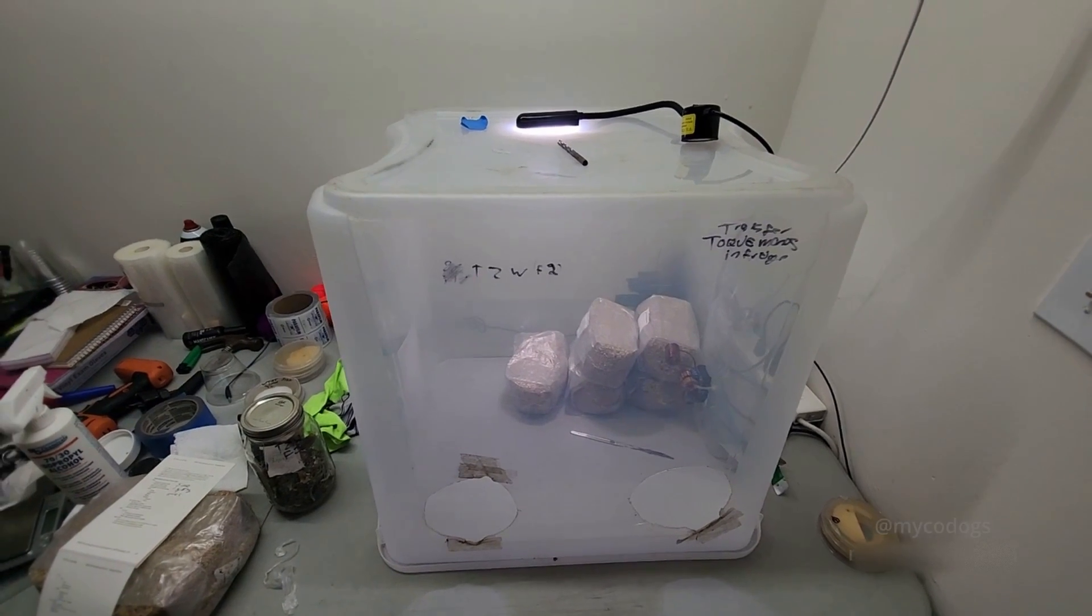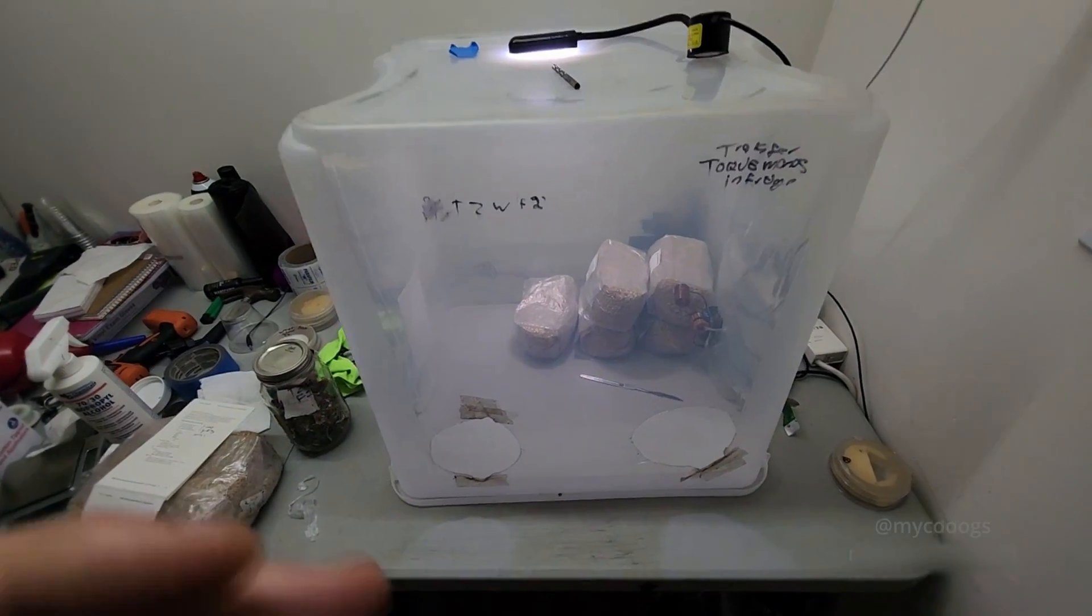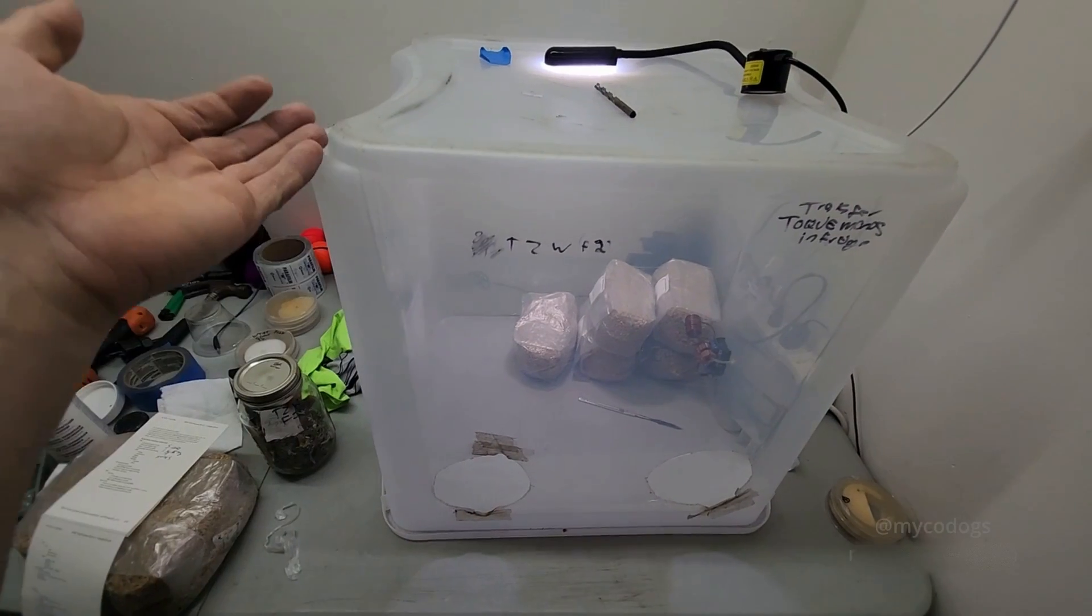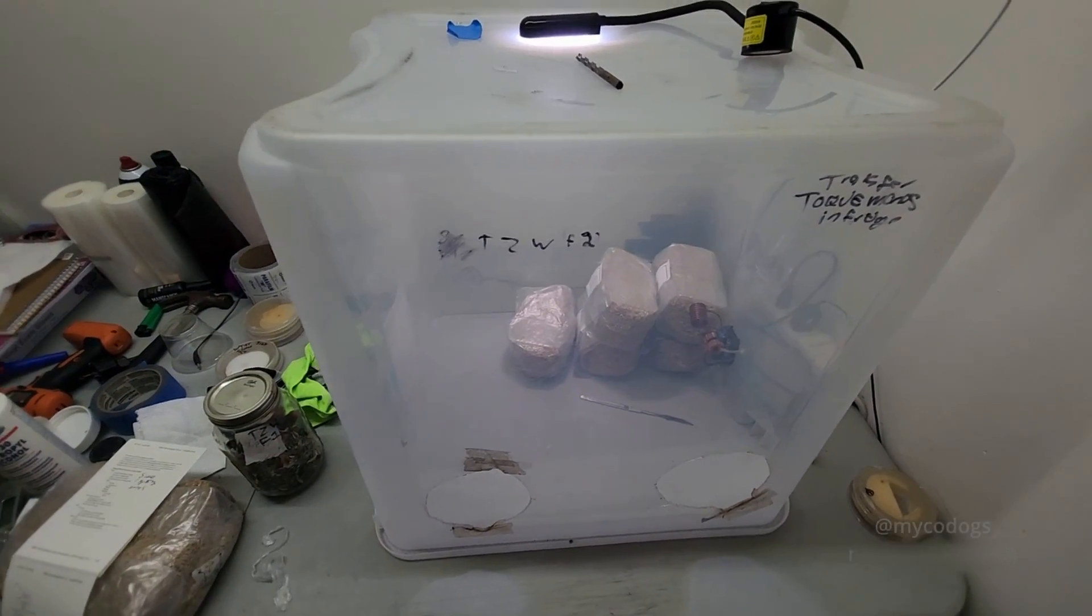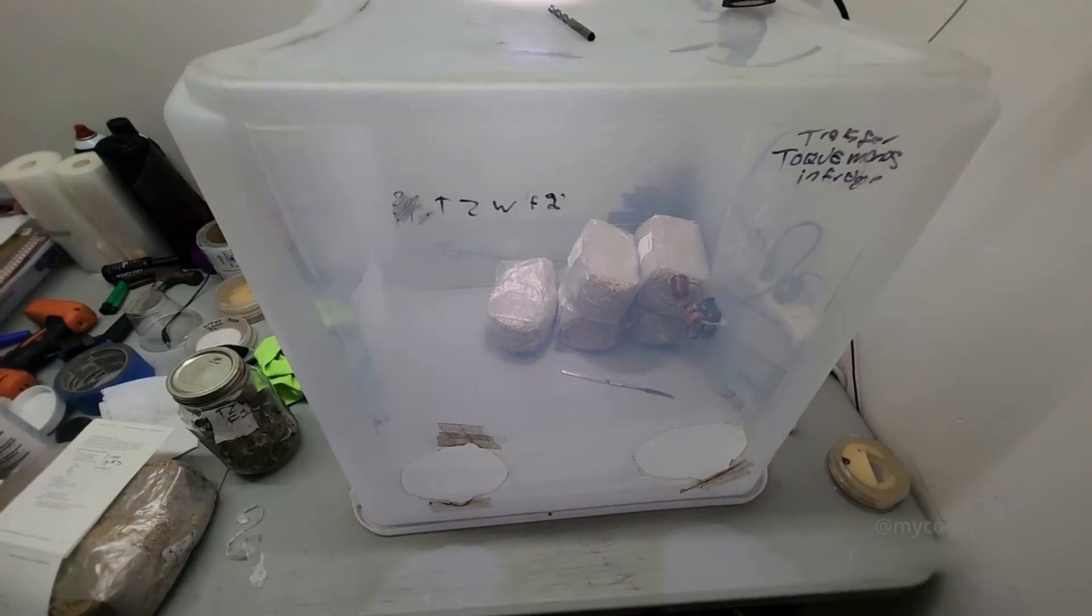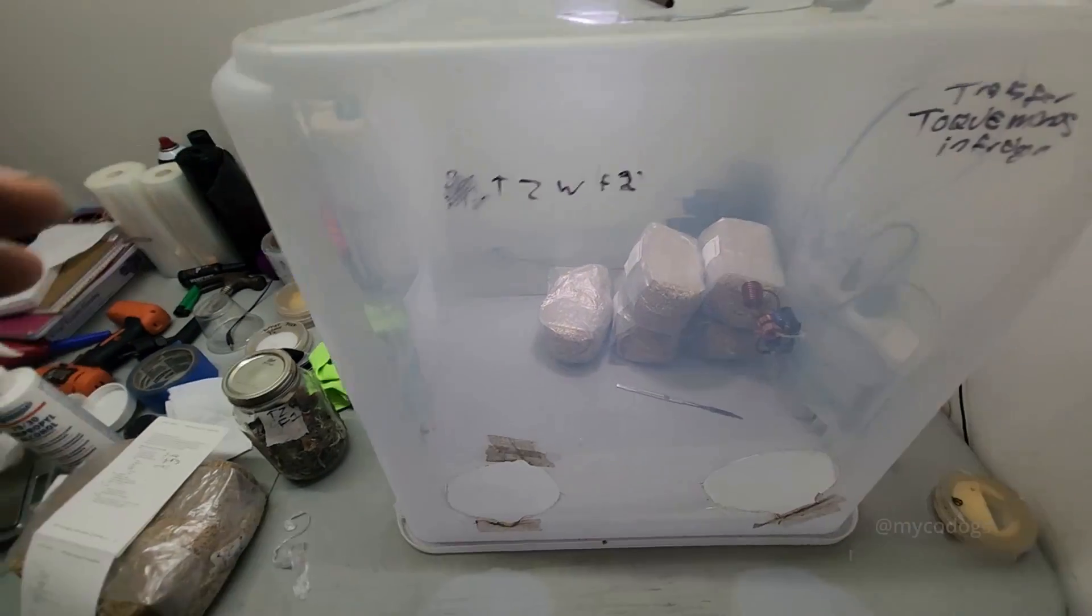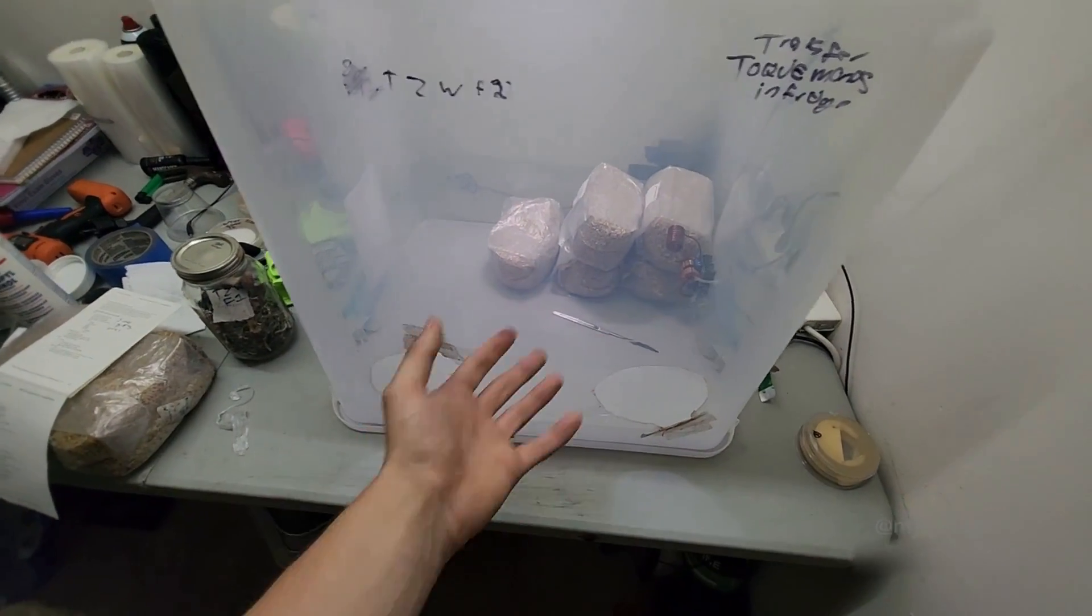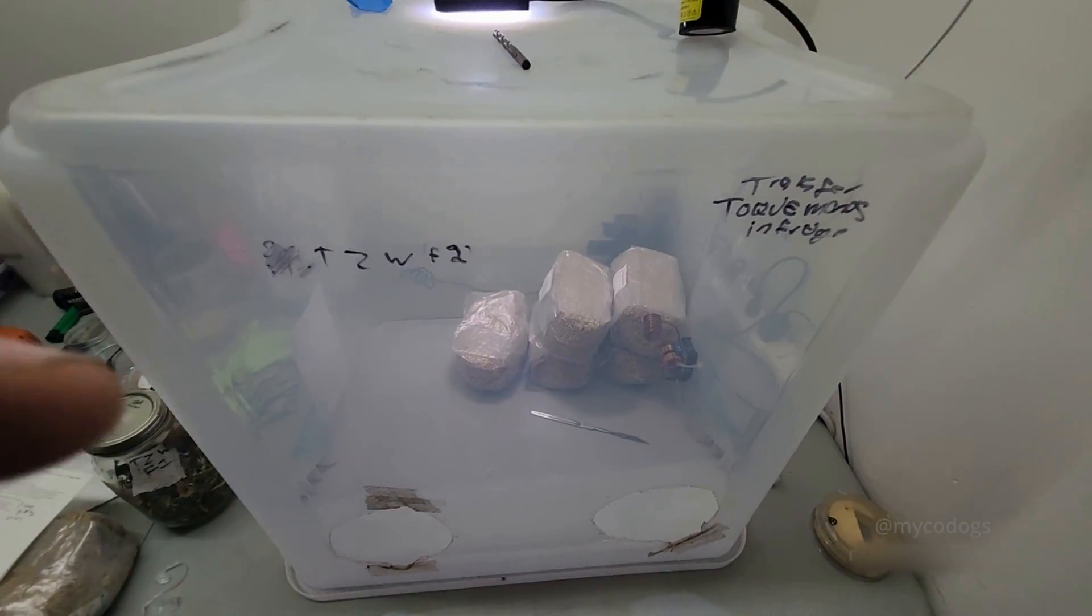All right, before we jump in, I just want to talk about what kind of still air box should you get. In my opinion, I think it's better to get a taller still air box than it is to get a wider still air box. That's primarily if you're working with bags or pouring plates inside of it. You want a nice vertical that gives you a lot of workspace. You don't need a whole ton of horizontal workspace because you can take things in and out of it as you're working, but the vertical really helps.